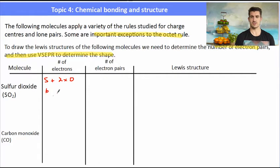For sulfur dioxide, we have sulfur and two oxygens. That's six plus two times six which gives us 18 electrons, meaning nine pairs of electrons in this molecule.